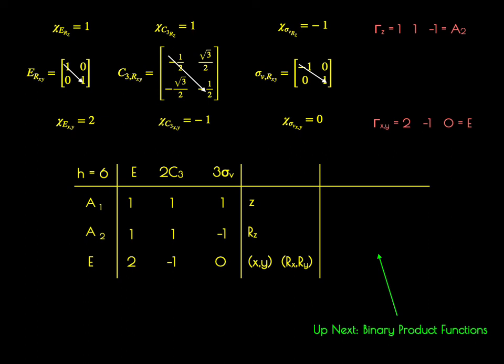In the final video in this series on constructing character tables, we're going to tackle the last column — forming the binary products of the C3V point group.